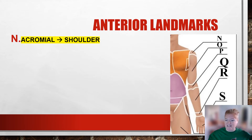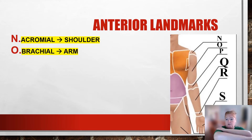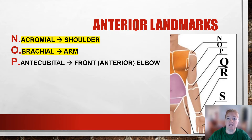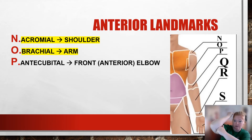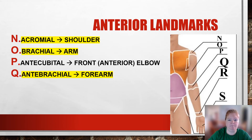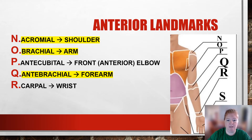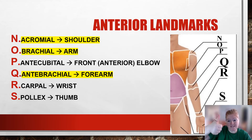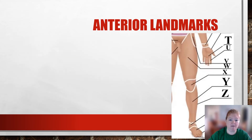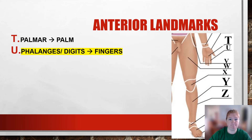For the upper limb, we have acromial — you can feel that point right there in your shoulder — and brachial. Then antecubital, which is the bend of your elbow right here. Antebrachial is the forearm area. Carpal is right here at your wrist. Pollux is the thumb. Then palmar, and finally phalanges or digits.